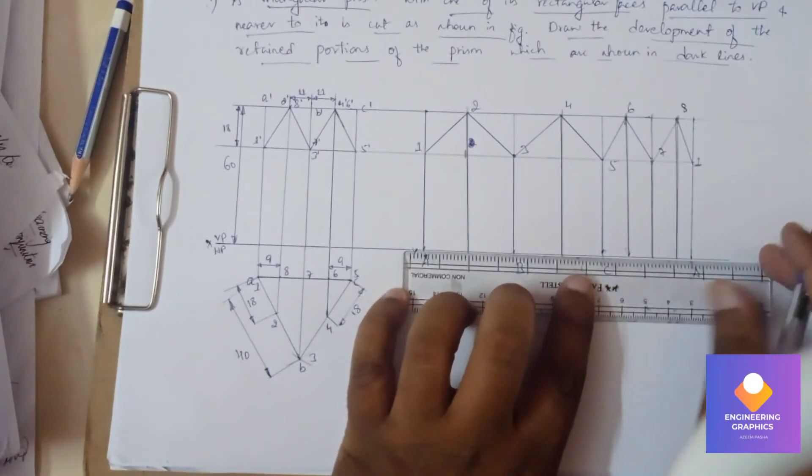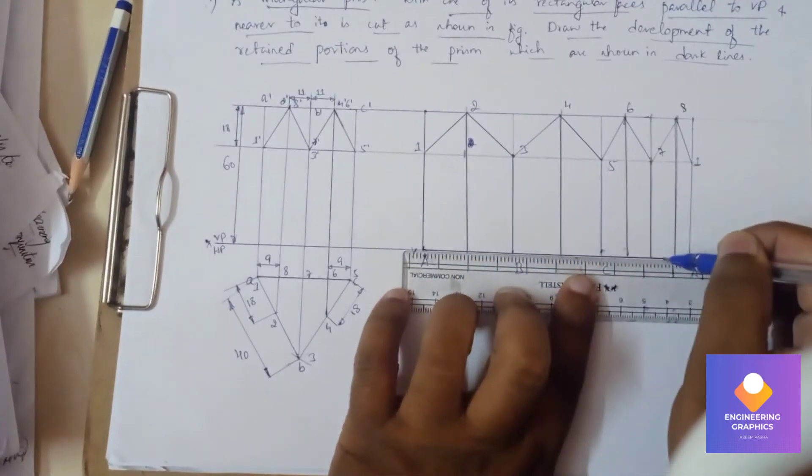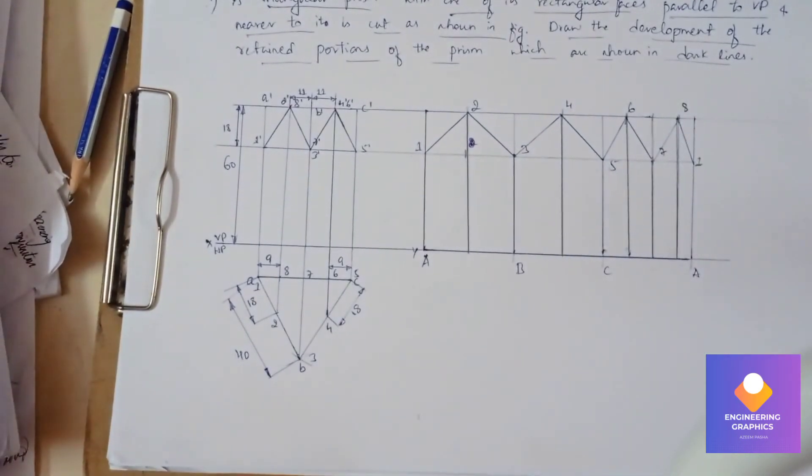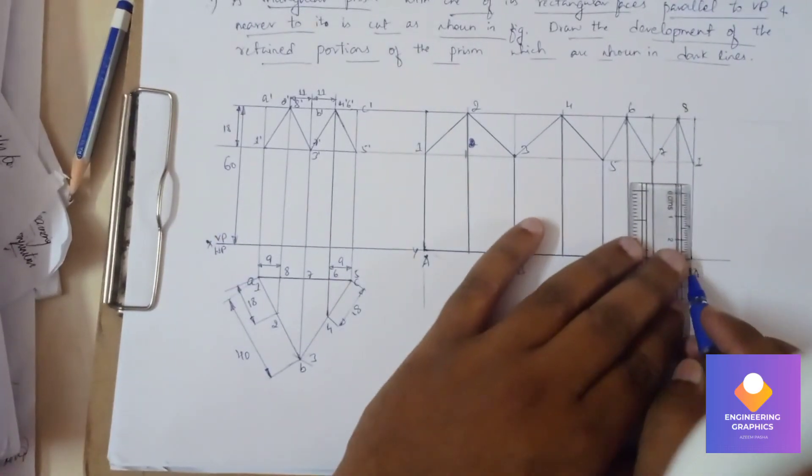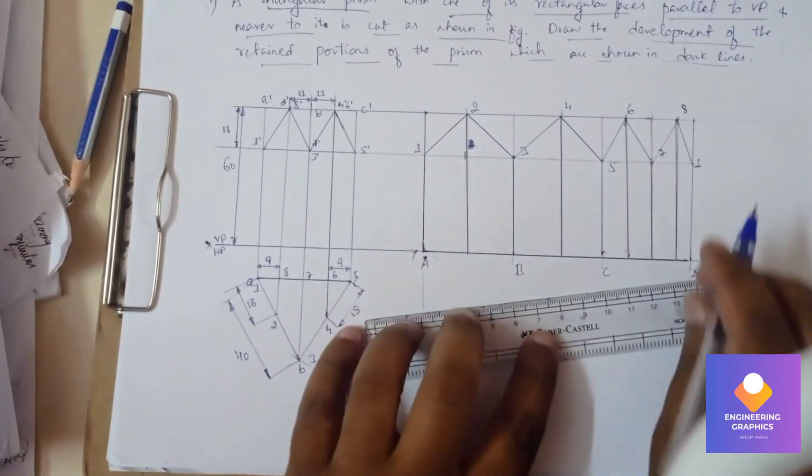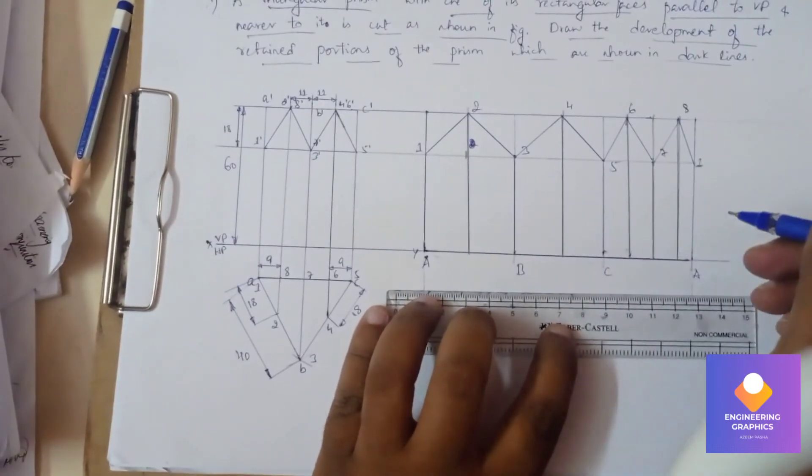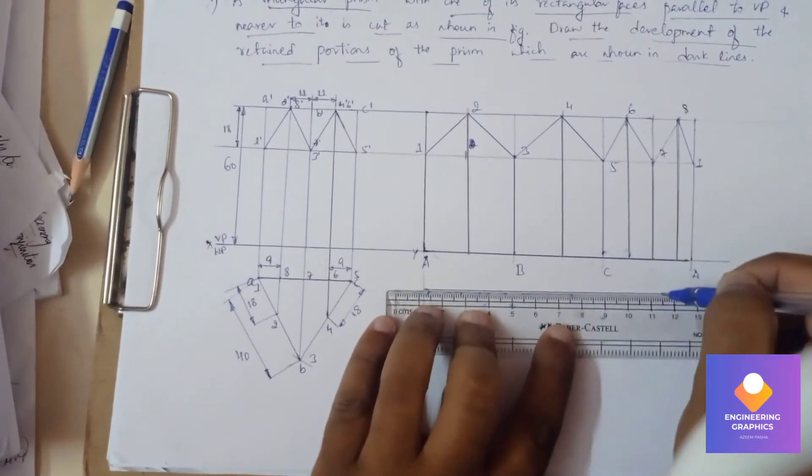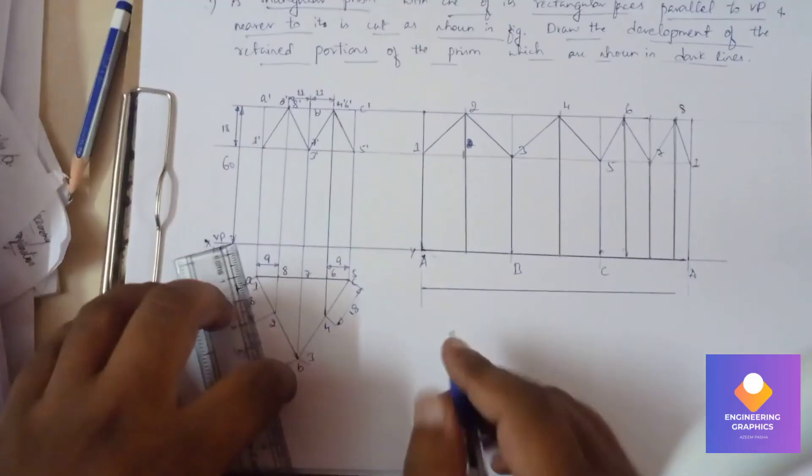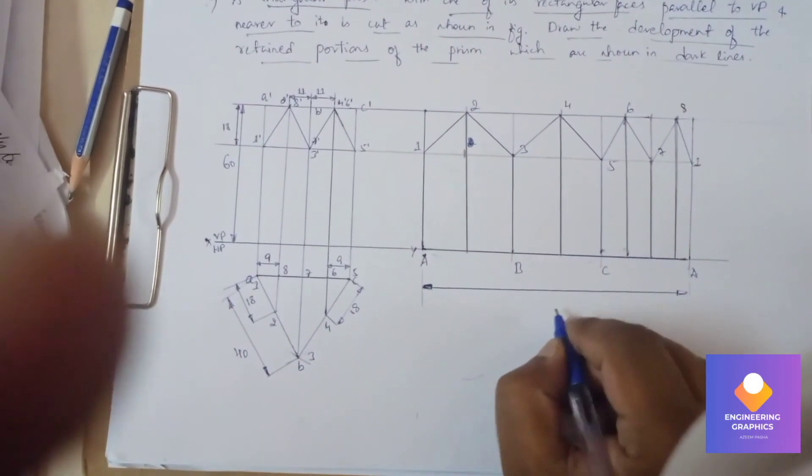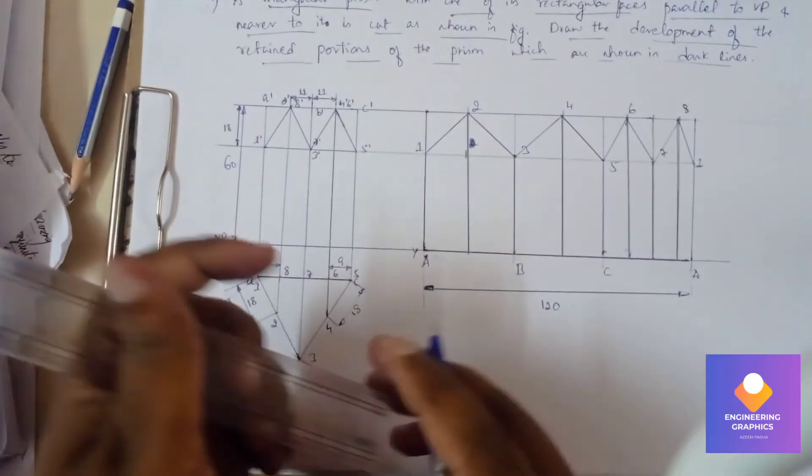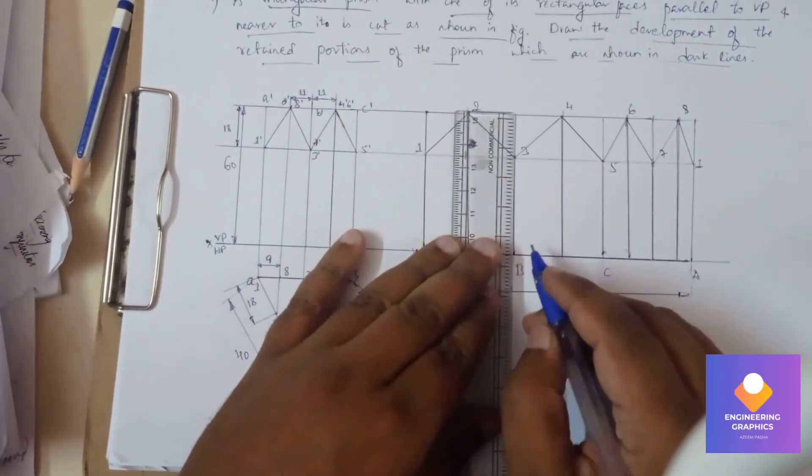Okay, this is what the retained portion. So we can mention the overall length here. So the overall length it is 120mm, okay. If from A to B it is 40mm.